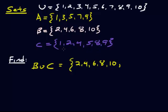Now that we're unioning that with C, any element that's in C that we haven't already listed, write those down. If there's any repeats, just ignore those. So C has 1 — we'll include that. C has 2 but we already have 2. We already have 4. C has 5, we don't have 5, so we'll put that down. We already have 8. C has 9, we do not have 9, so we'll add that. And that's B union C.